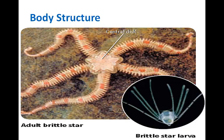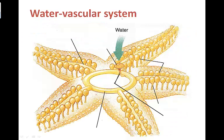All echinoderms are going to have radial symmetry as adults. Here the adult brittle star has five legs radiating from a central disc. However, when they're larvae, they have bilateral symmetry — that one plane of symmetry.